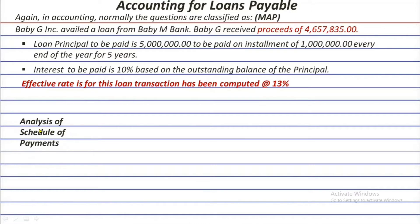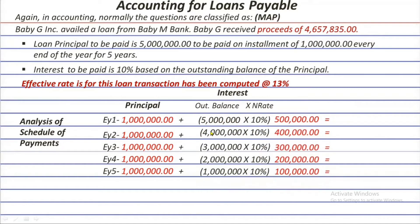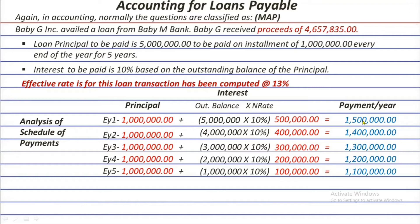Number two in the deeper analysis pertains to the pattern and amount of payments every year. For the principal, it is paid in installments of 1 million per year. Interest at 10 percent is based on the outstanding balance: so in year one, 10% is based on 5 million; year two, on 4 million; year three, 3 million; year four, 2 million; and year five, 1 million. Because of this, yearly payments are not uniform.